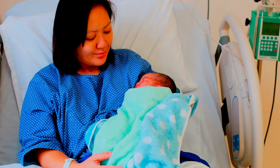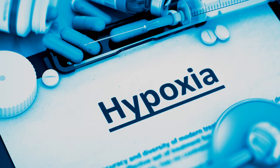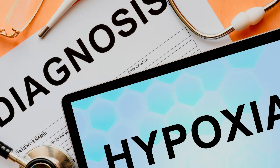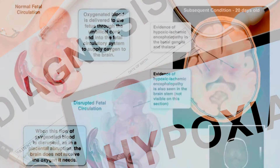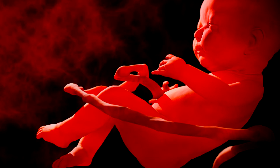HIE is hypoxic ischemic encephalopathy. Hypoxia relates to an inadequate supply of oxygen. Ischemia regards an inadequate blood supply. And encephalopathy relates to the brain. So in totality, HIE occurs when the supply of oxygen and blood to the brain is inadequate — meaning it's not enough — and this can then lead to a brain injury.